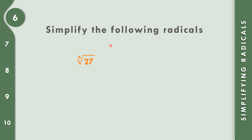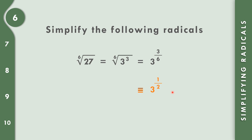For number 6, we have the 6th root of 27. We find that 3 times 3 times 3 equals 27, so 27 equals 3 cubed. That gives us the 6th root of 3 cubed. Writing the exponent 3 over the index 6 and reducing: 3 divided by 3 is 1, and 6 divided by 3 is 2, giving 3 to the 1 half. Converting back, the final answer is the square root of 3.